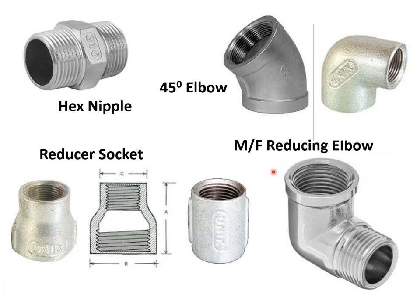This is a male-female reducing elbow. If threads are worked out inside, then it is a female end. If threads are worked out outside, then it is a male end. In this particular fitting, we can see one end is the male end and the other is the female end, and it is reducing as well — so it is known as a male-female reducing elbow.